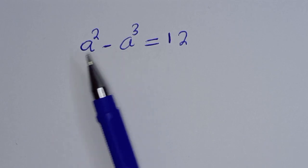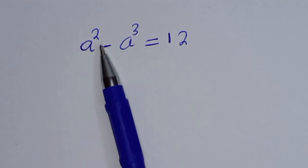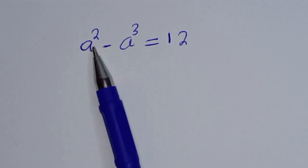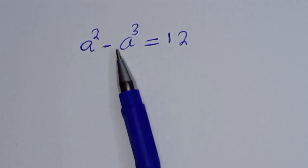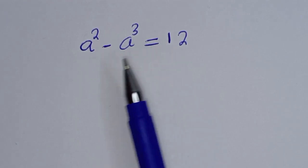Hi everyone. How to solve for a from this given math problem: a squared minus a raised to power 3 is equal to 12.